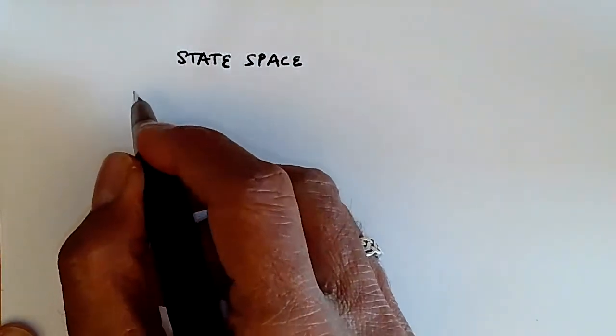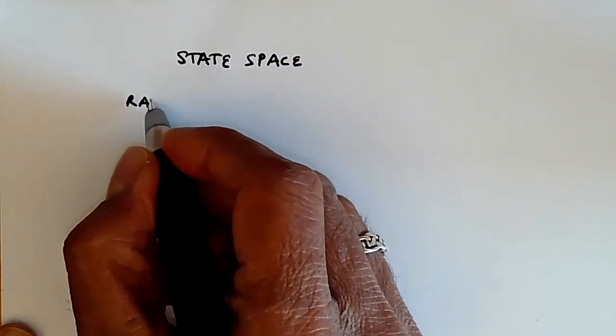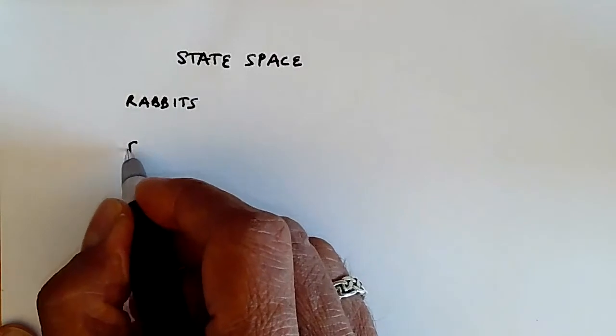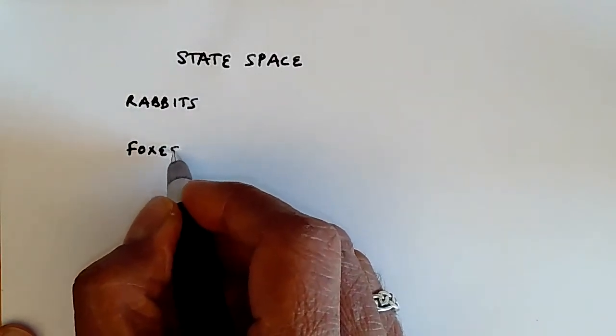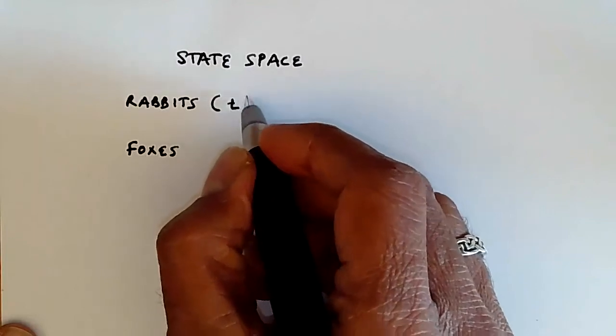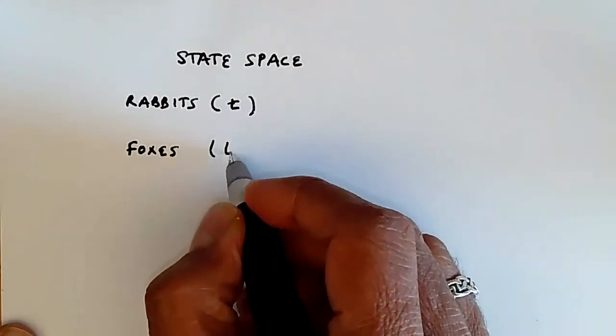Let's start with a simple example with the rabbits and foxes that we talked about earlier. We have a certain set of rabbits and a certain set of foxes. These are both dynamic variables of time. We can call it rabbits of t and foxes of t.